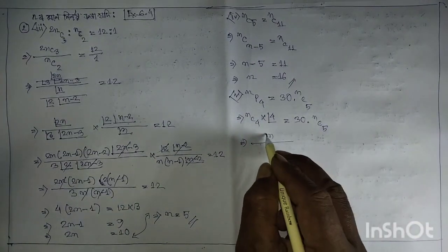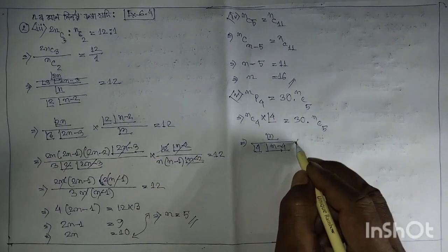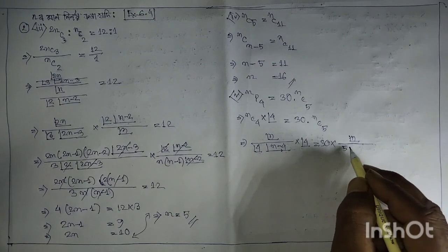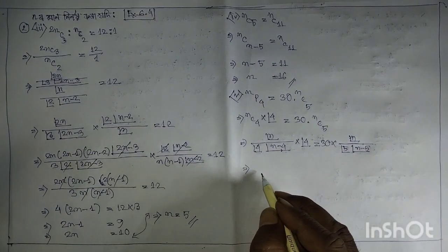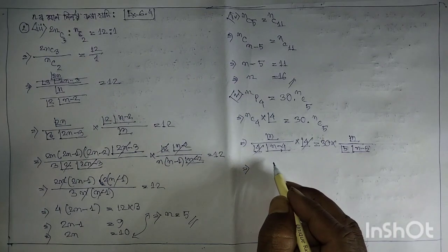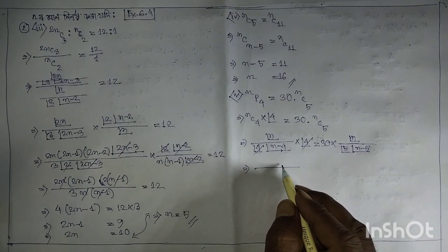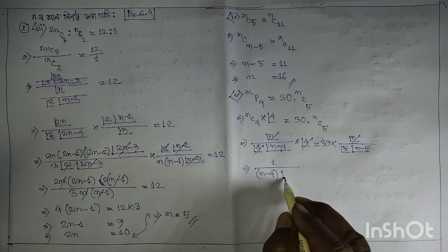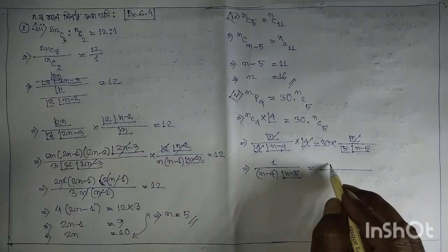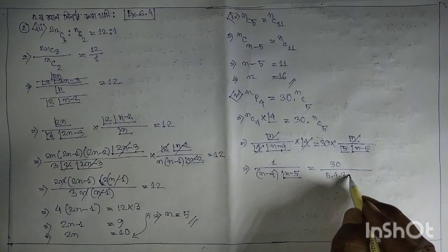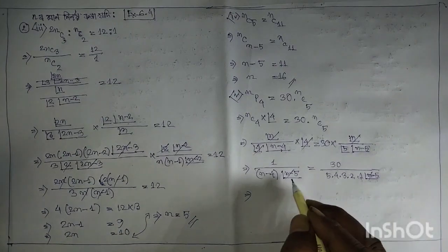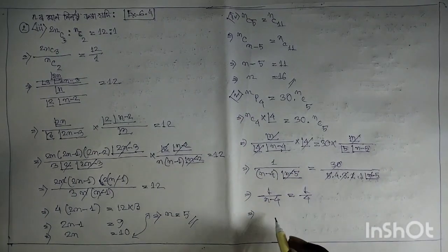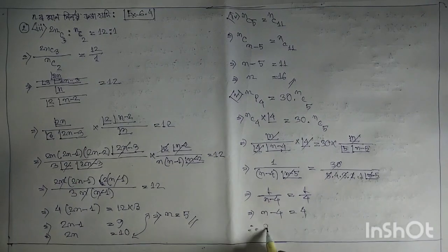n divided by equal 5 into n minus 5 implies equal 4 is concerned 1 by. n minus 5 equals 30 by 5 into 4 into 3 into 2 into 1, add to them n minus 5 implies n minus 4 is equal to 3 to 5, 1 by 4 implies n minus 4 is equal to 4, therefore n is equal to 8.